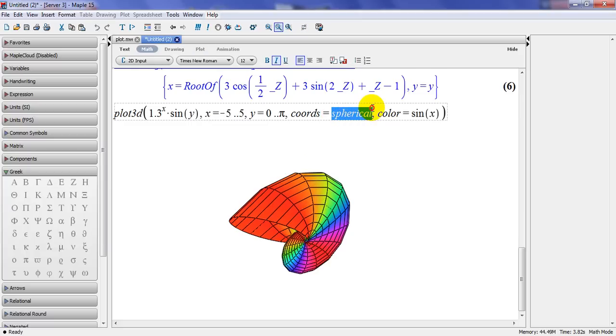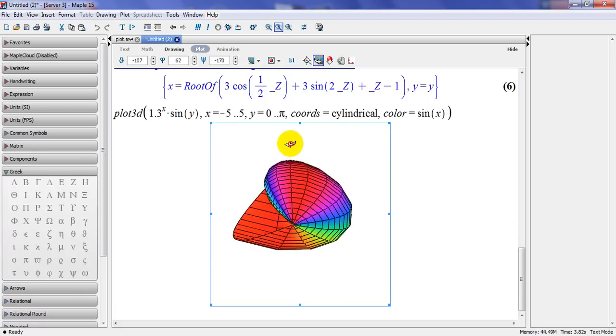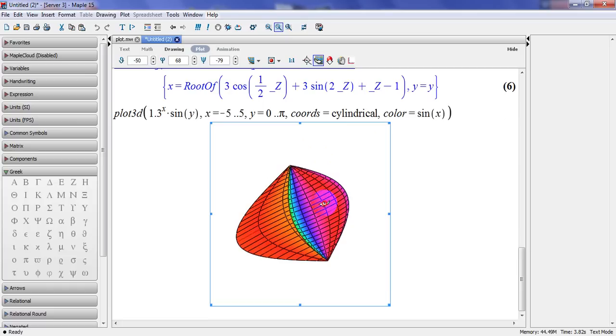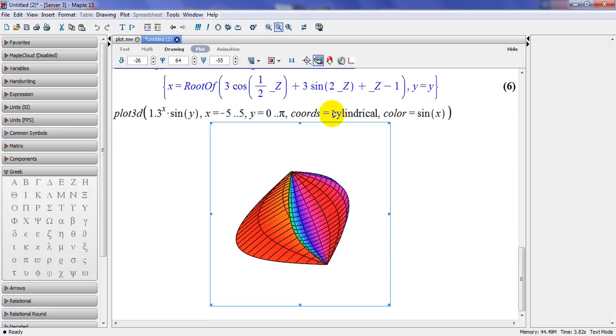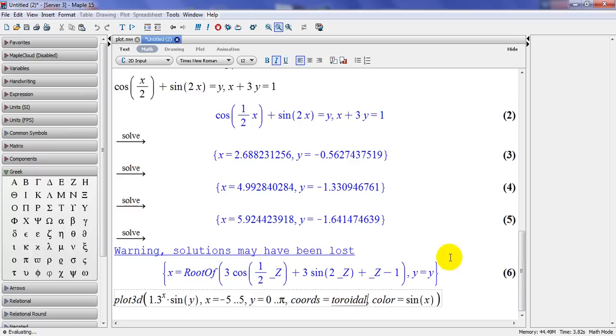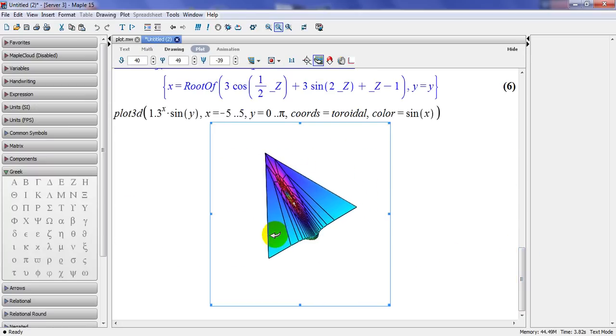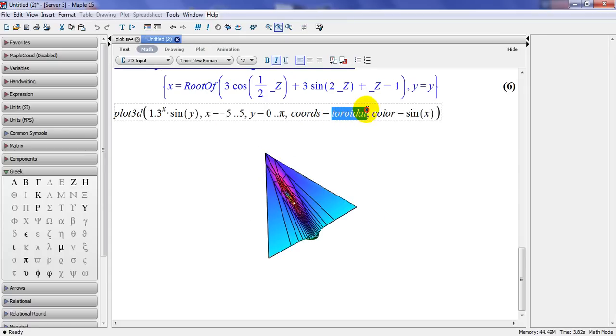Instead of here, I could actually plot that in cylindrical. And this is how it looks. Slightly different. And there is another option here that I could use. And that would be toroidal. So it depends on what coordinate you'd like to work with.